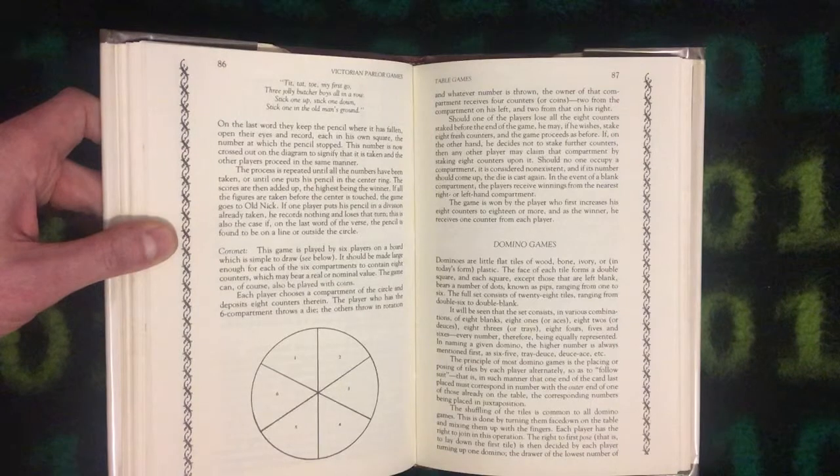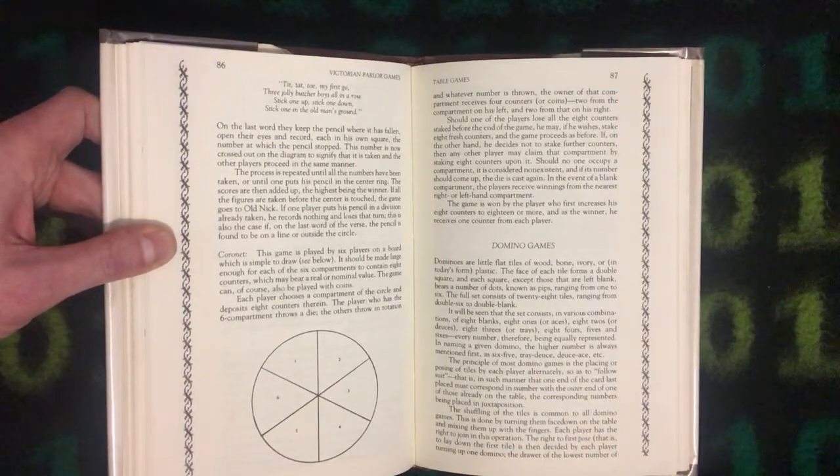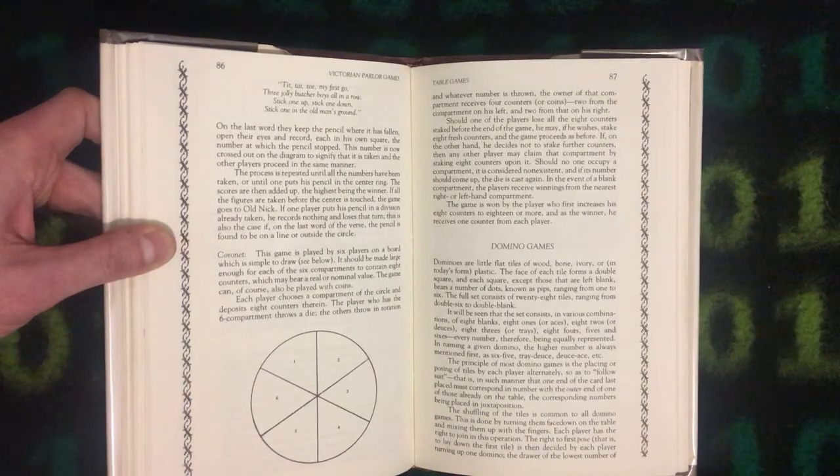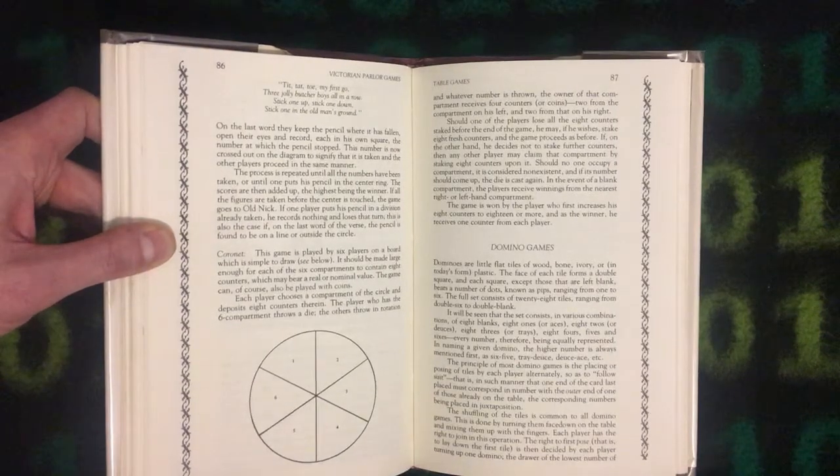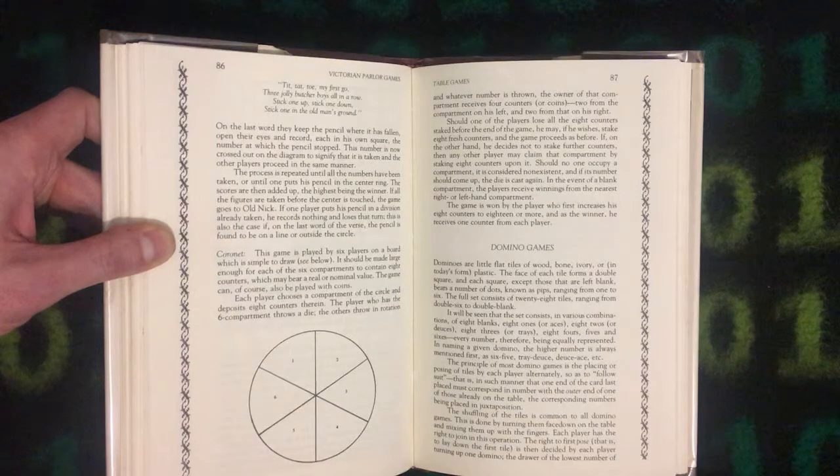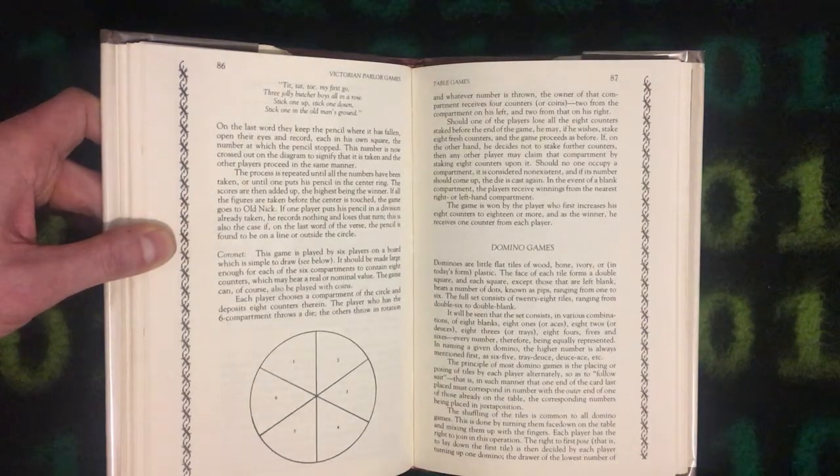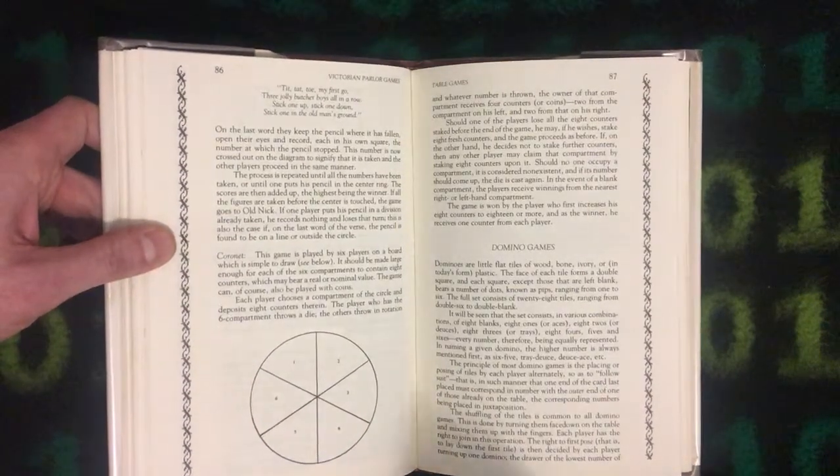Should no one occupy a compartment, it is considered non-existent. And if its number should come up, the die is cast again. In the event of a blank compartment, the players receive winnings from the nearest right or left hand compartment. The game is won by the player who first increases his eight counters to eighteen or more. And as the winner, he receives one counter from each player.